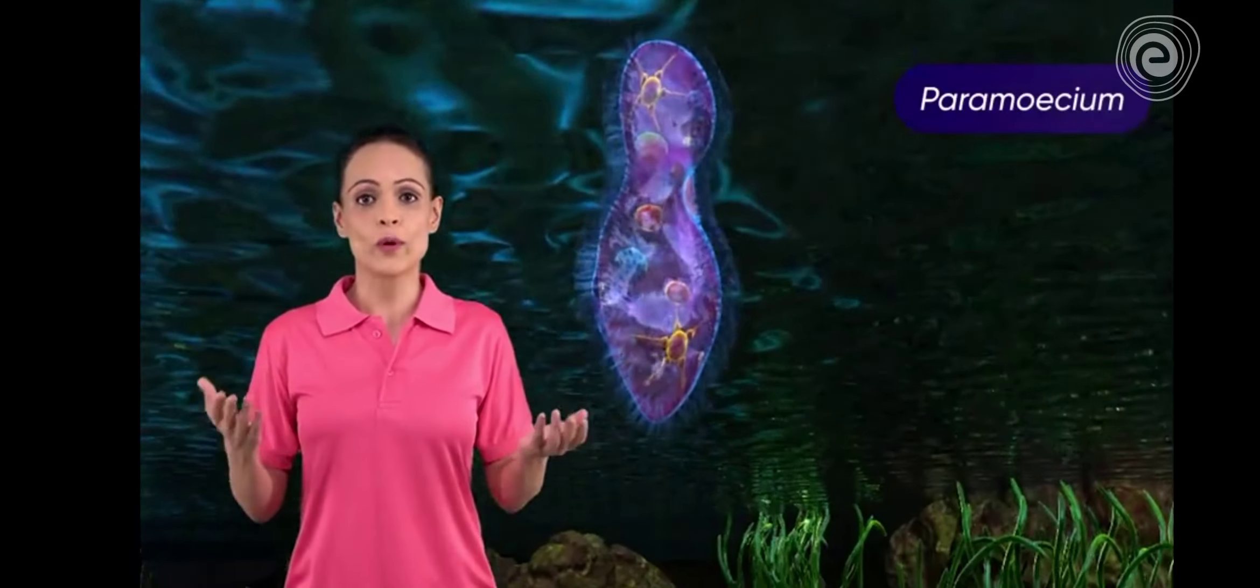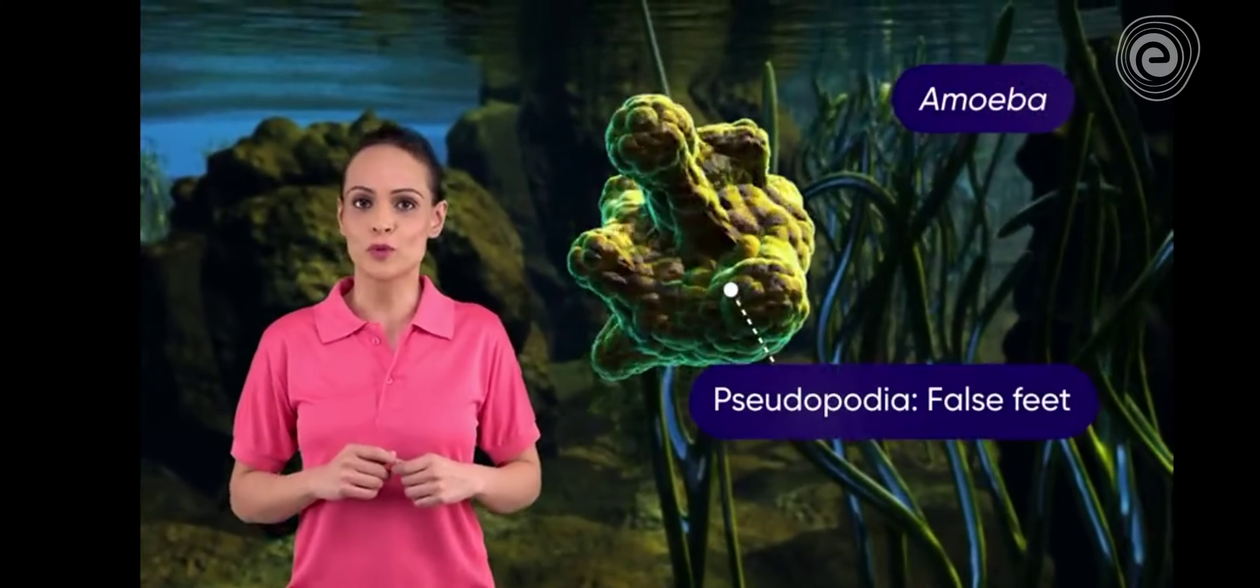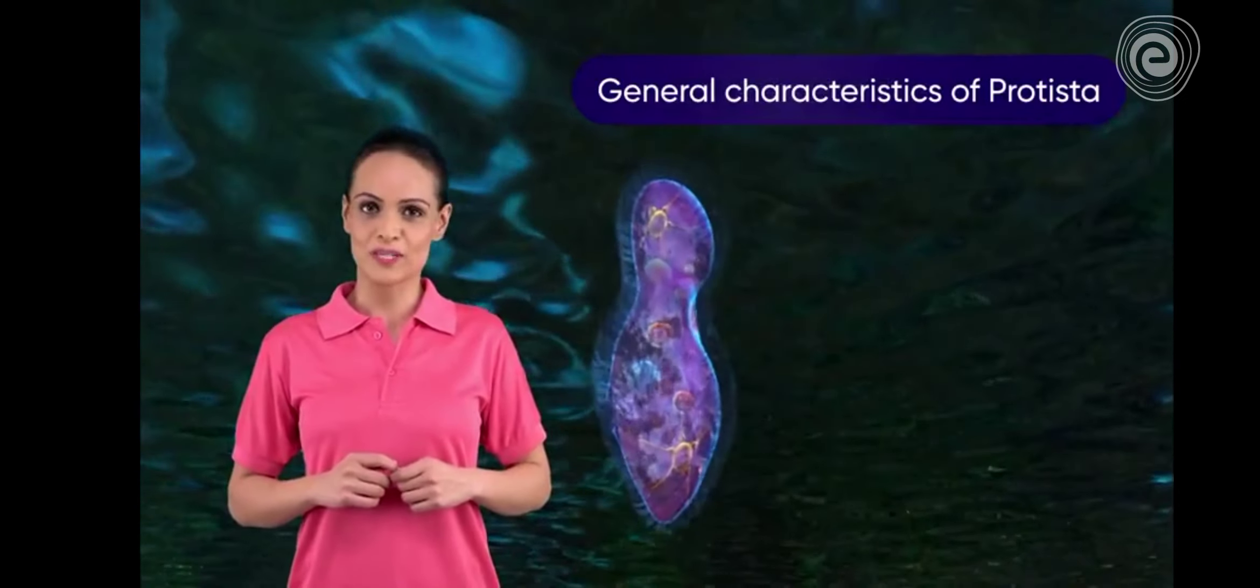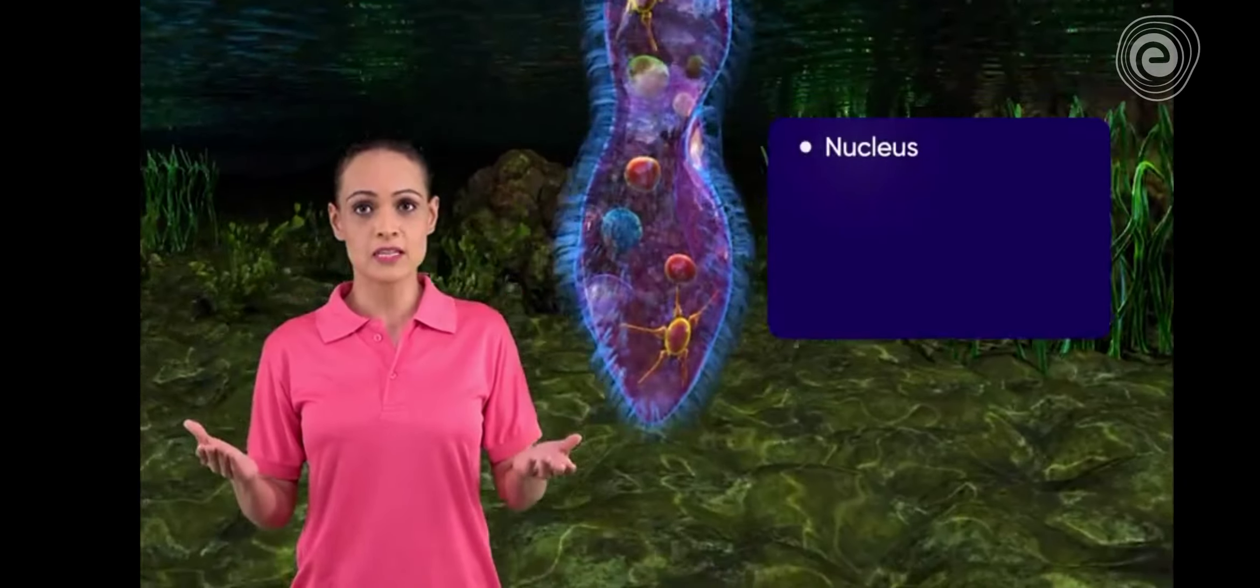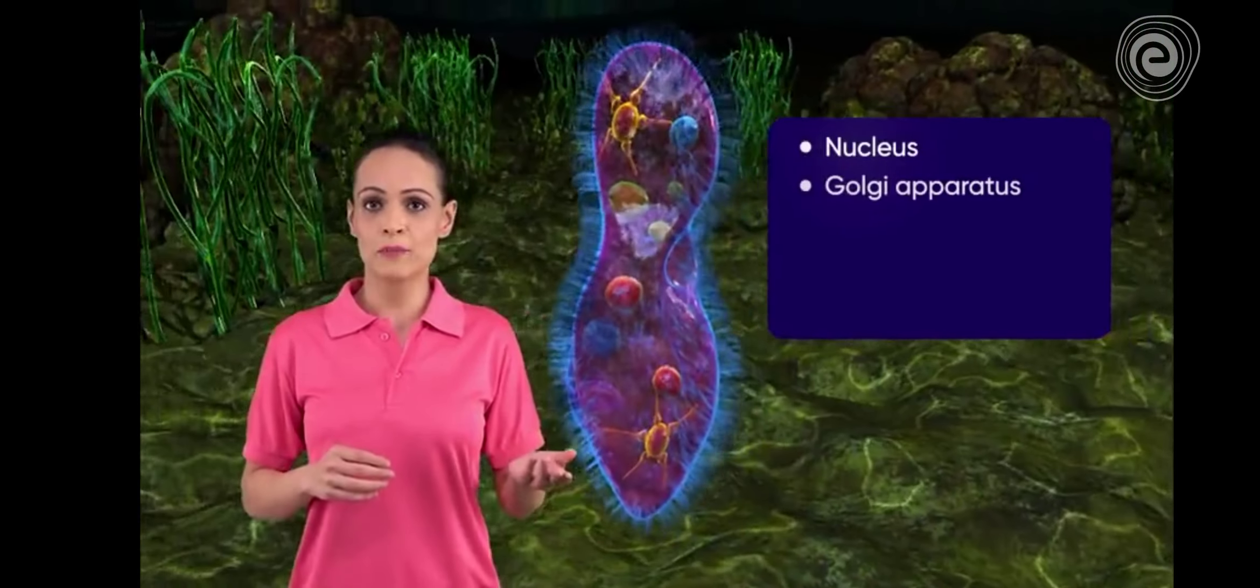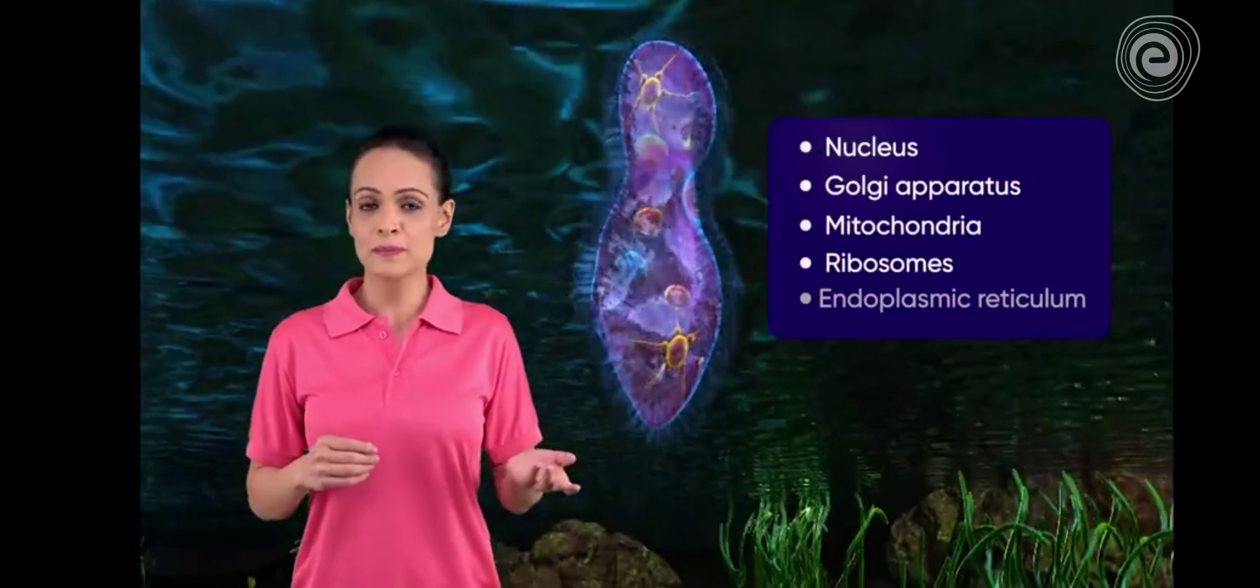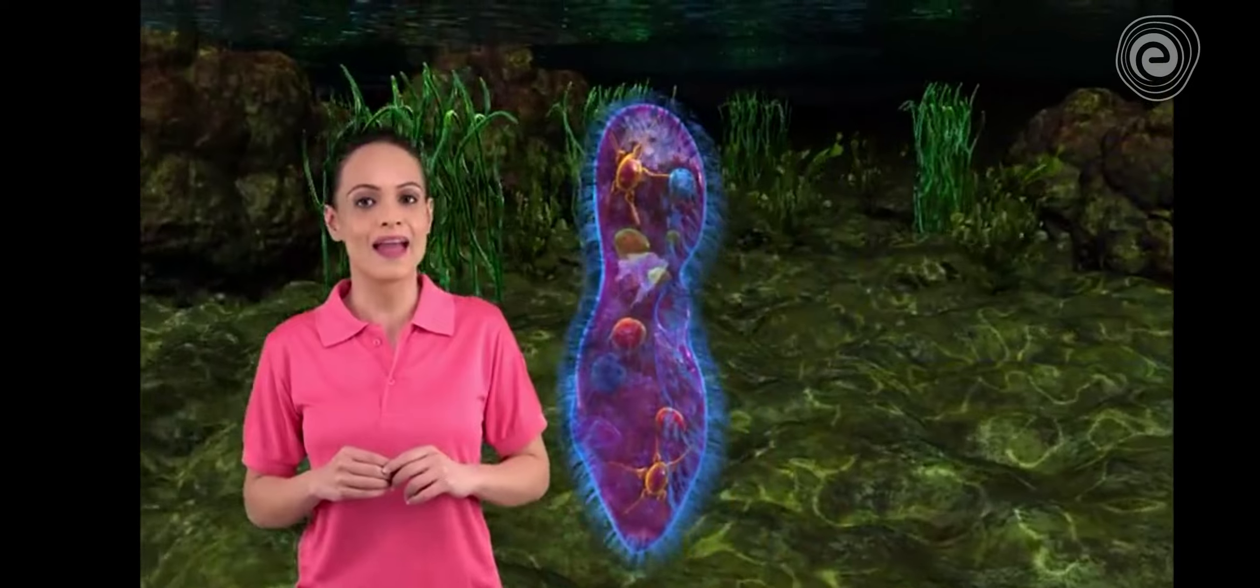Some of them show the presence of pseudopodia. General characters of Protista: they have well-developed nucleus. Organelles like Golgi apparatus, mitochondria, ribosomes, endoplasmic reticulum, etc. are present in the cytoplasm and are membrane-bound.